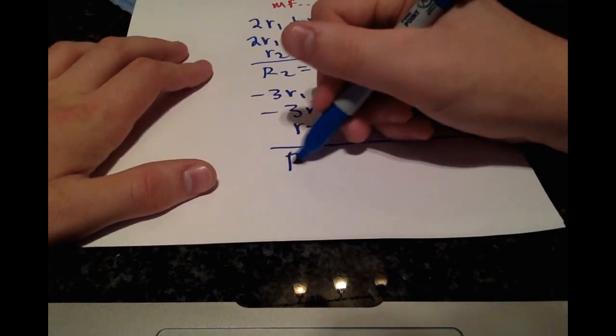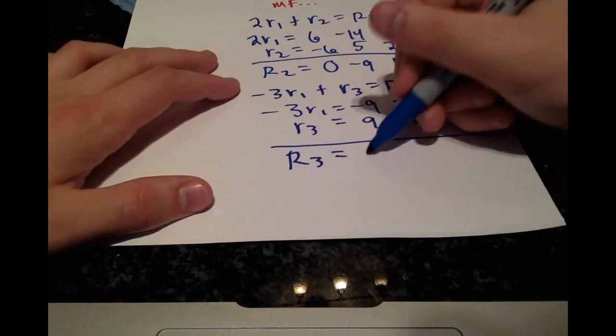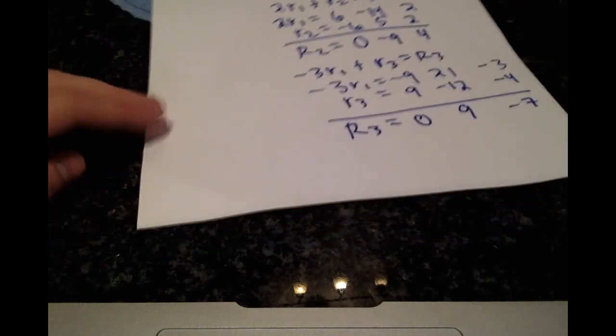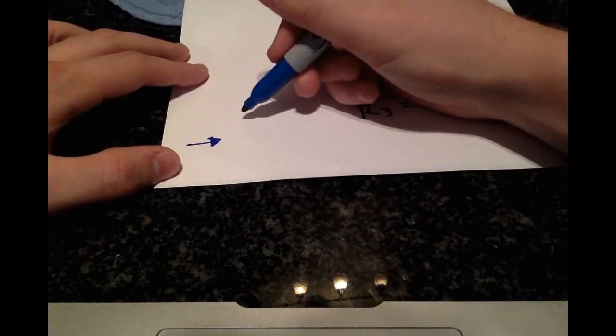Adding these together to get our new row 3, we get 0, 9, negative 7. So we can write what we have so far.